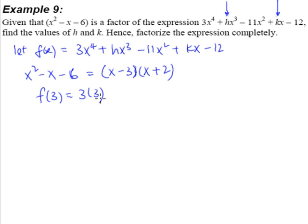So 3 times 3 raised to the power 4 plus h multiplied by 3 raised to the power 3 minus 11 multiplied by 3 raised to the power 2 plus 3k minus 12.